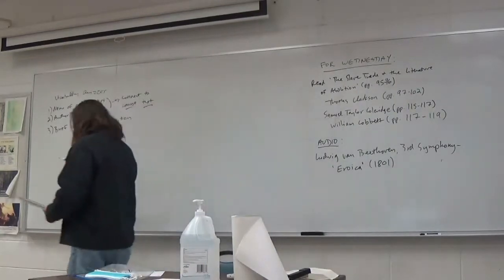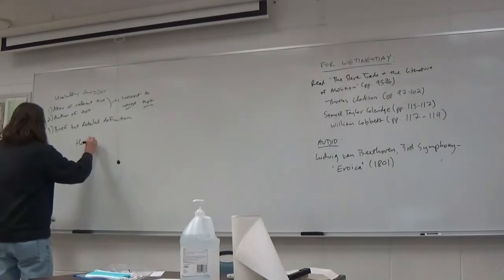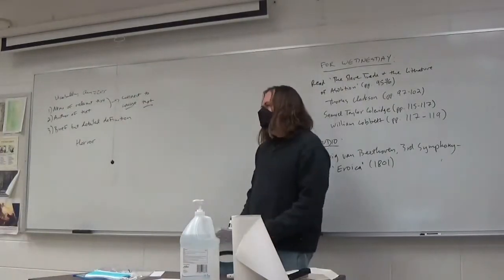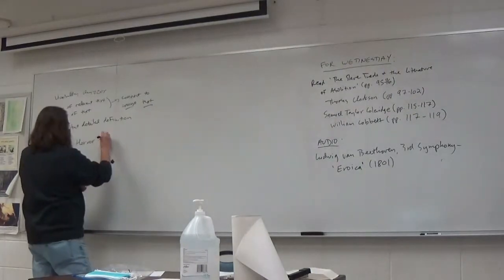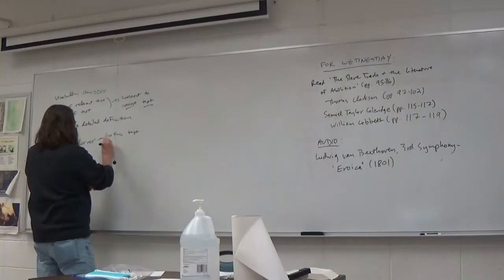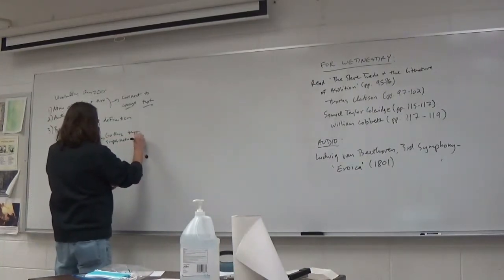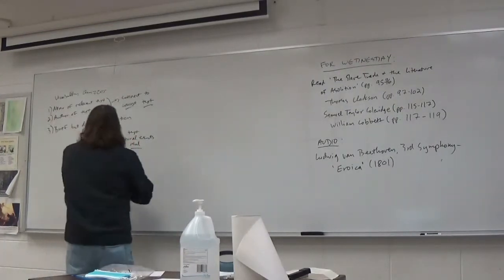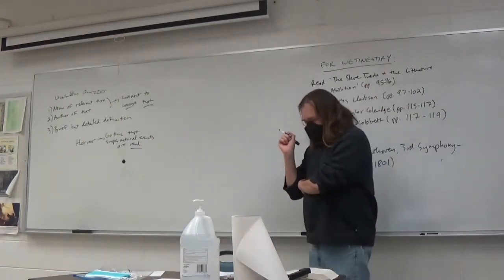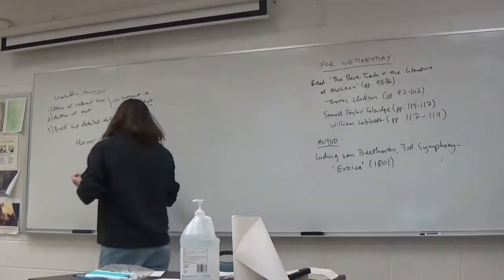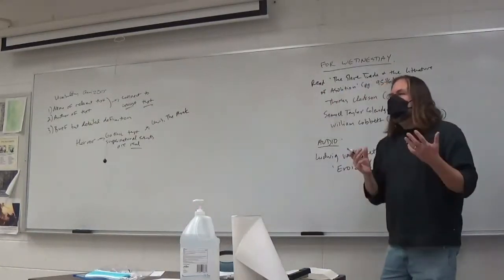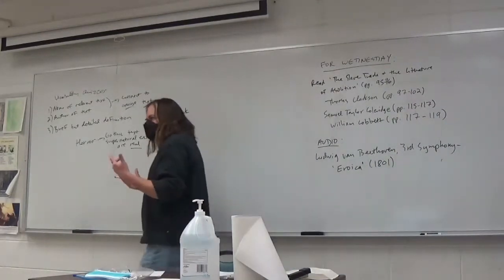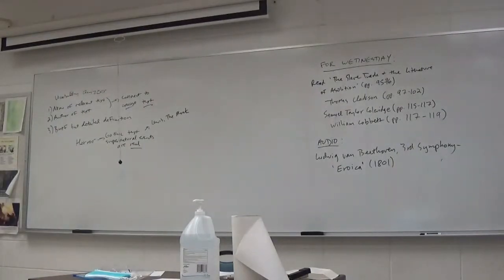First: horror. Horror is the type of text where all supernatural events and uncanny happenings are meant to be perceived as real — it's a version of the gothic in which supernatural events are taken as real. Course texts we might connect this to include The Monk, Coleridge's review of The Monk, or the Aikin essay on the objects of terror — I would have accepted any of those.